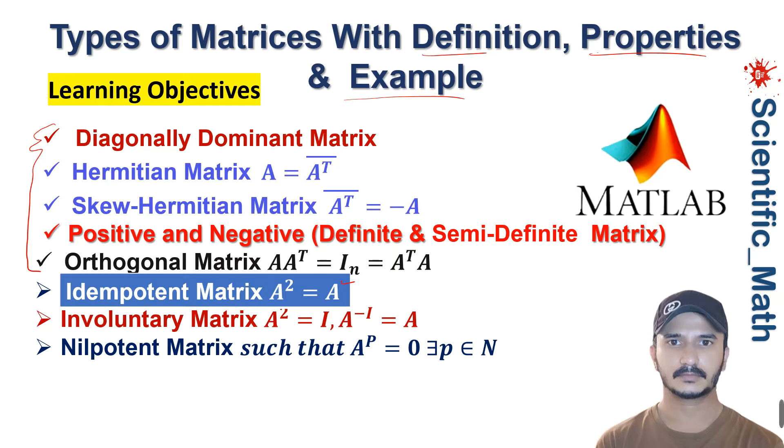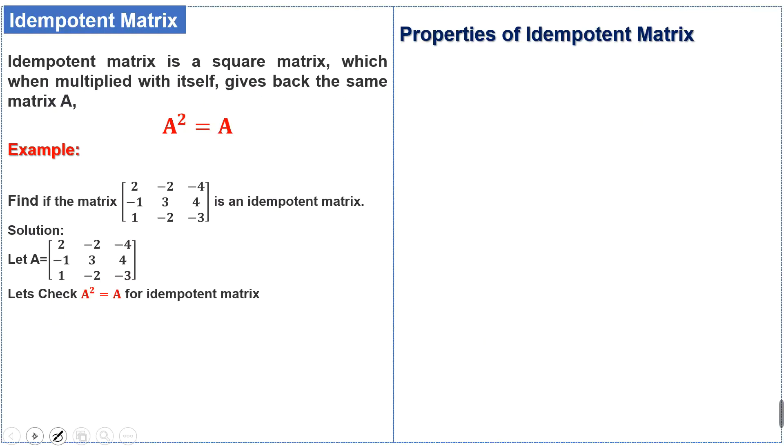Idempotent matrix is a square matrix which when multiplied with itself gives back the same matrix A. So when we take the square of the matrix, it will give us again the same matrix.